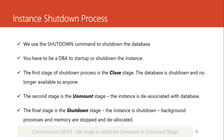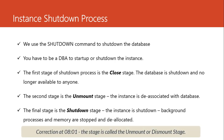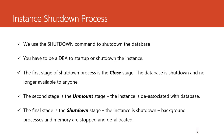Then we move to the second stage called the dismount stage — the instance is disassociated from the database; they are disjointed. The instance goes back to its place and the data goes back to its place. Then the final stage is the shutdown stage, where everything is shut down: the background processes are stopped and memory is cleared. When you look carefully, you can see that the shutdown process is simply the reverse order of the startup process.